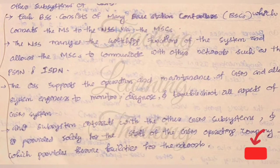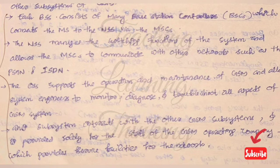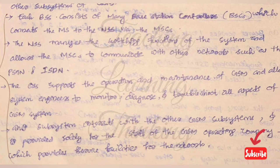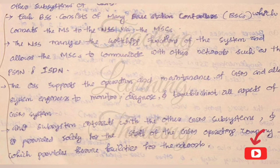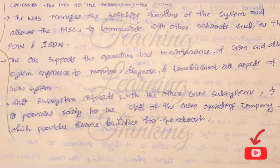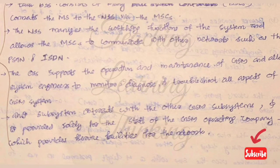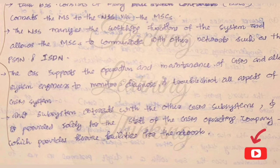The OSS is connected to the NSS and uses the switching functions to communicate with the PSTN or ISDN public network. This subsystem interacts with the other GSM subsystems and provides service facilities only for the staff of the GSM operating company.